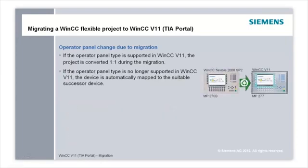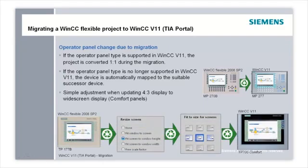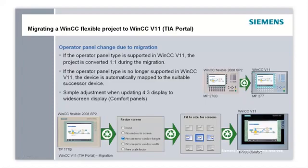WinCC version 11 also supports you regarding settings such as screen resolution, and arrangement and size of elements on the display. You can, for example, specify prior to the migration how to place the contents of the migrated pictures on the new operator panel. This is a particular advantage in the case of widescreen resolution on the new operator panel. In the displayed example, the TP177B with a 4:3 resolution is migrated to a TP700 Comfort panel with widescreen resolution, with the configured picture adopted using the preset Fit Screen to Window Height option.